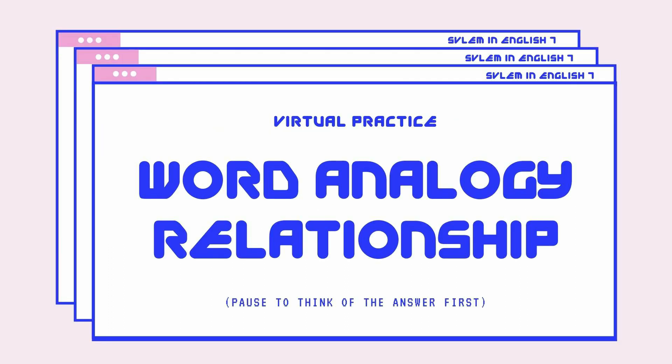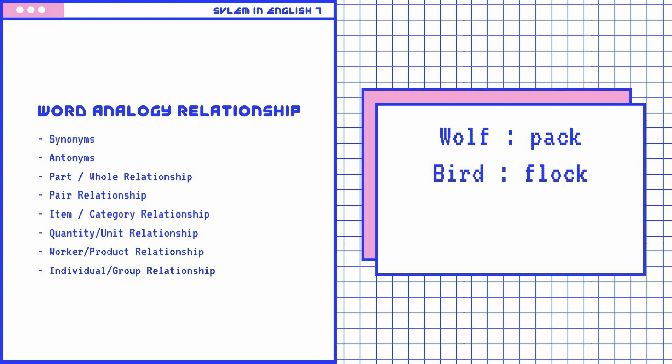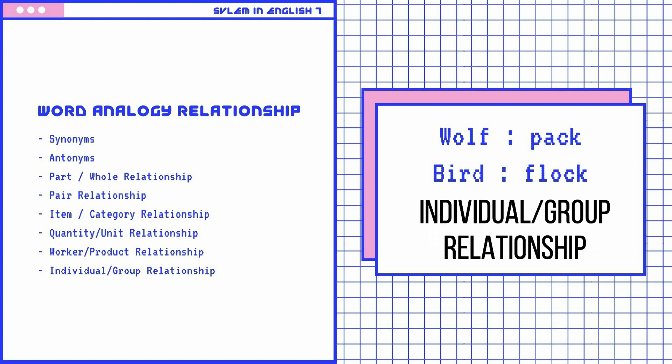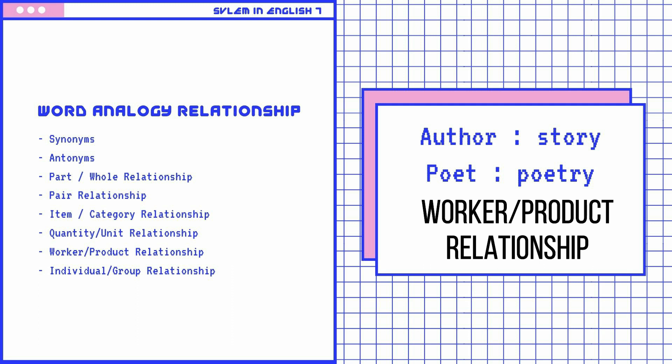Can you guess the relationship of the words from our examples earlier? Let's try it out. Small is to petite, large is to giant — what word relationship do they have? Great! They are synonyms. Wolf is to pack, bird is to flock — wonderful! That's an individual-group relationship. Author is to story, poet is to poetry — that is a worker-product relationship.